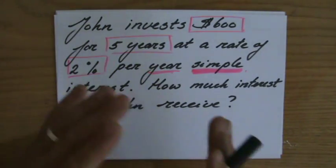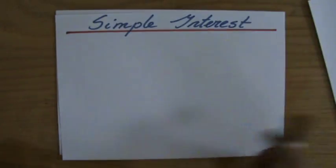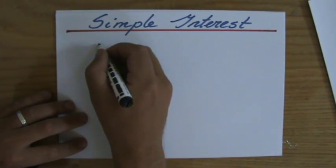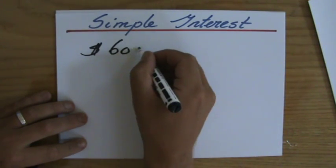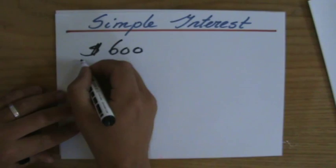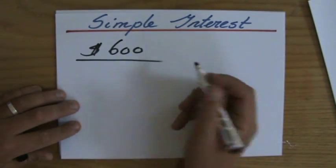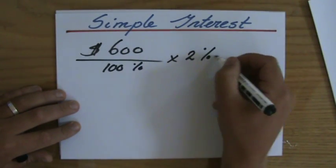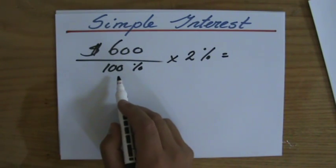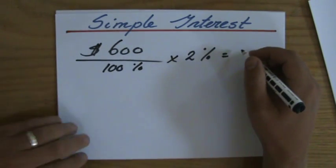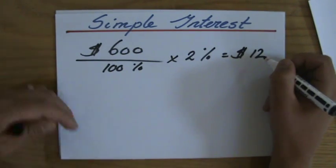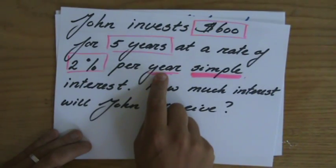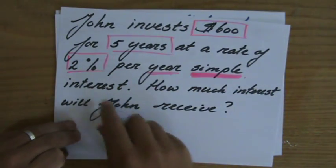So what do I have to do first? I'm going to find out what two percent of six hundred dollars is. I always find one percent first, then multiply. Six hundred divided by one hundred is six, times two gives twelve. So John is going to get twelve dollars every year, because the two percent was per year.